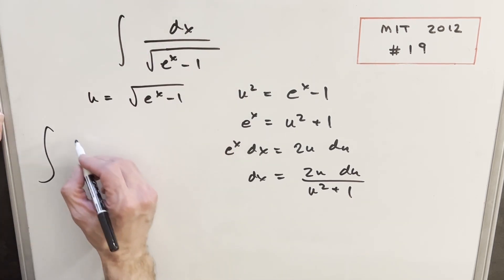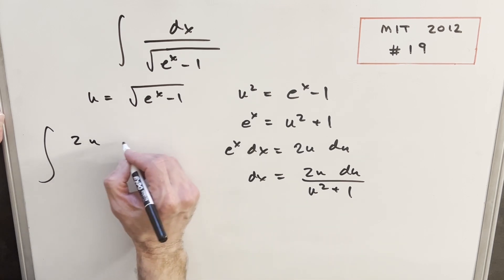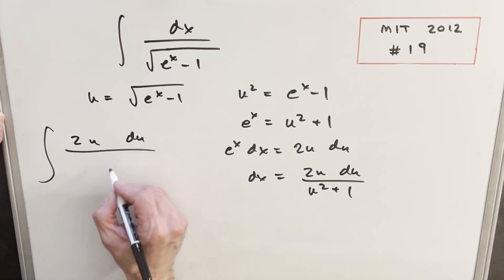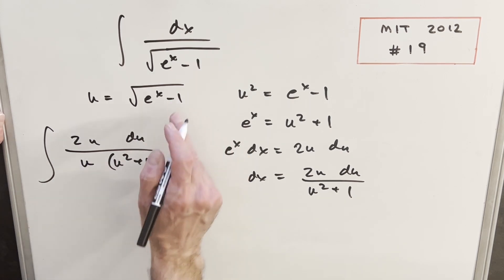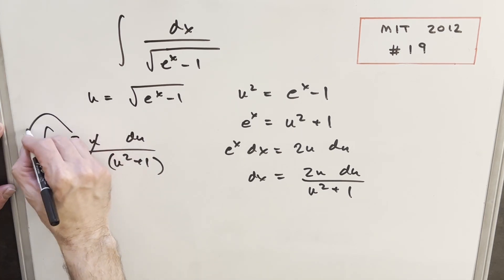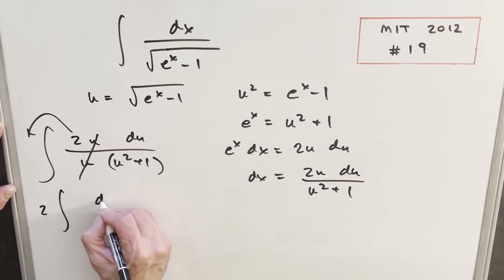So for our dx, we're going to plug in all this business over here. So we'll have 2u du over u squared plus 1. But then we just don't want to forget this. We have our u value right here. Then these u's will cancel. We could just bring this 2 out front. So we're going to have 2 du over u squared plus 1.